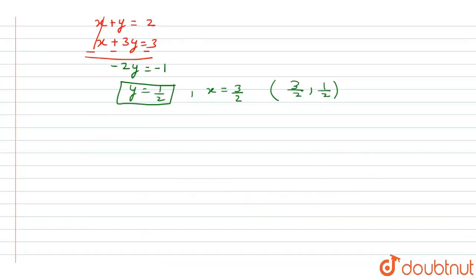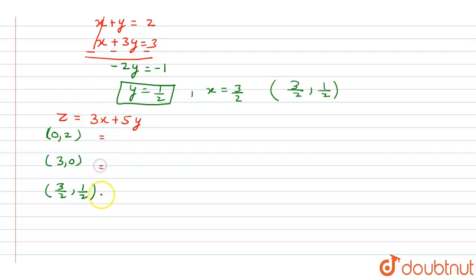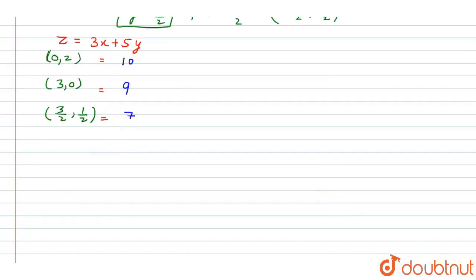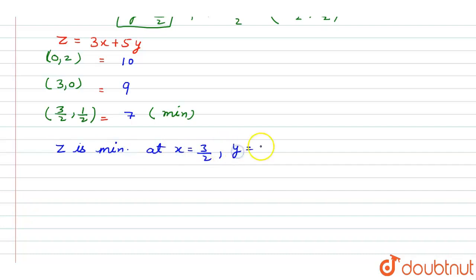The three corner points are (0, 2), (3, 0), and (3/2, 1/2). We evaluate z equals 3x plus 5y at each point. At (0, 2): z equals 10. At (3, 0): z equals 9. At (3/2, 1/2): z equals 7. The minimum value is 7, which occurs at x equals 3/2 and y equals 1/2. This is the minimum value of z.